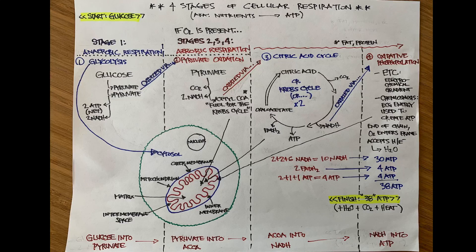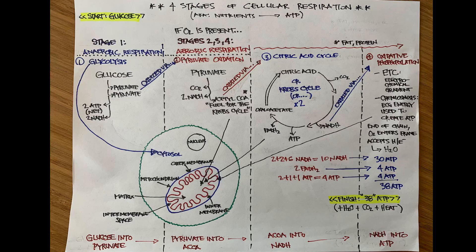Those 10 NADH are so important because each one creates 3 ATP, for a net output of 30 ATP. We also get another 4 from the FADH. So up until oxidative phosphorylation we only had 4 ATP; now we get 34 more. It's interesting to note it started with anaerobic metabolism — all these people worried about building a big anaerobic work capacity should know that the anaerobic work capacity still funnels into aerobic. Anaerobic efforts never really operate in isolation; what feeds the aerobic system when it comes to glucose is the anaerobic process.